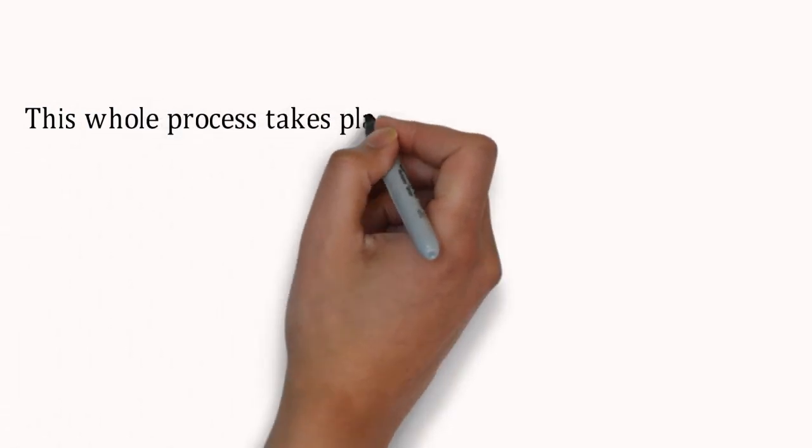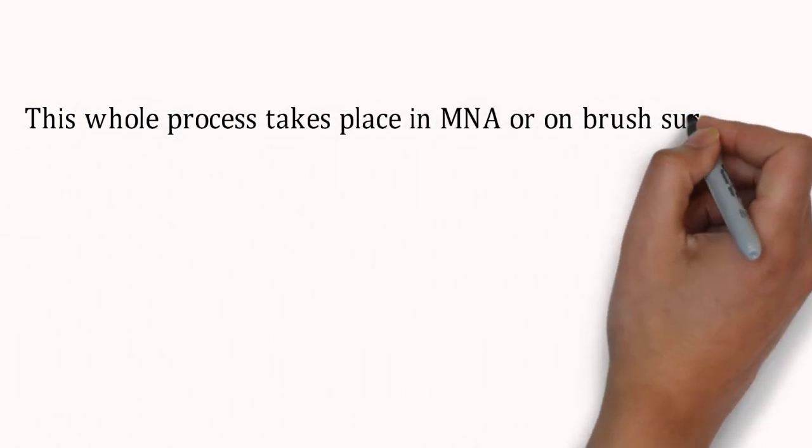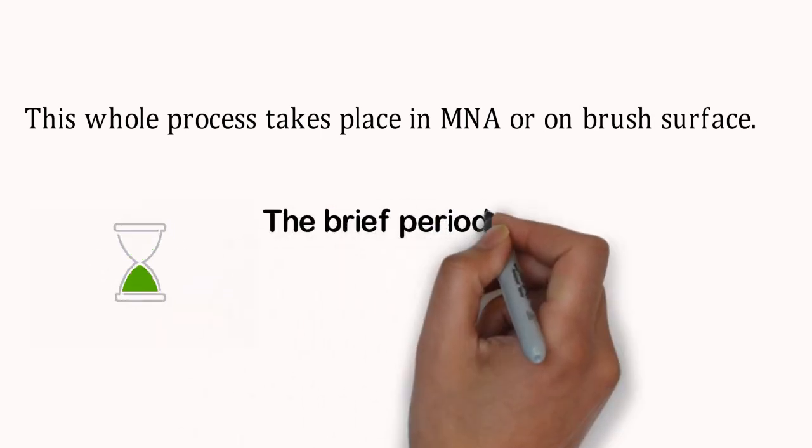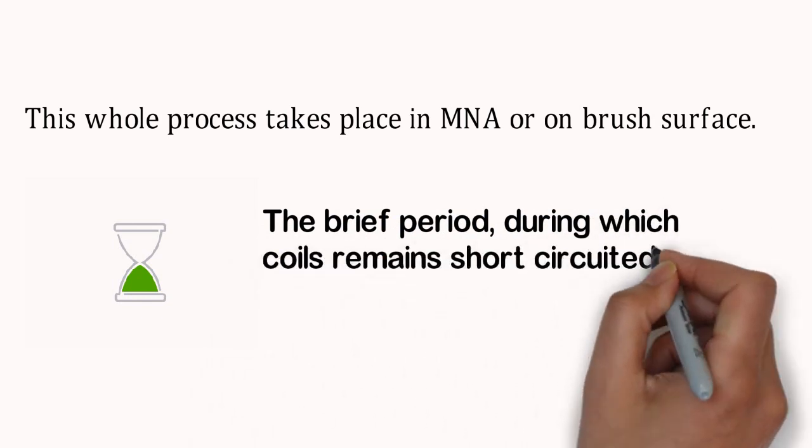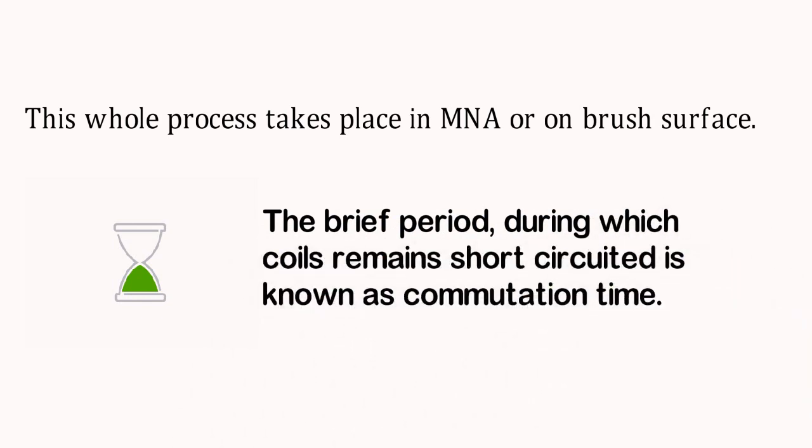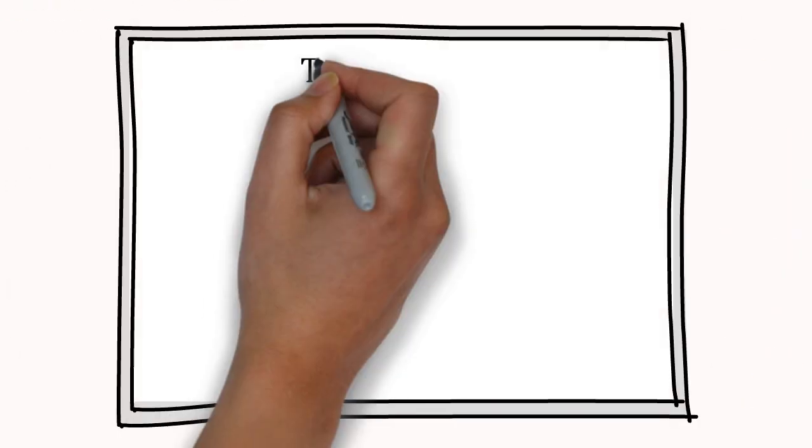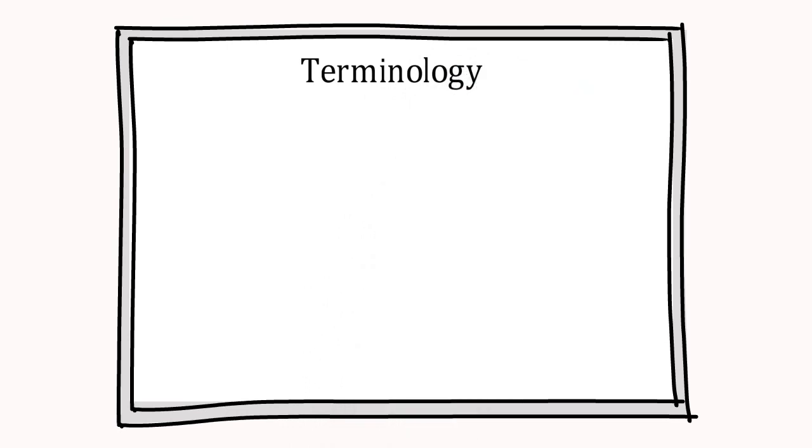This whole process takes place in MNA or on brush surface. This current reversal process takes fraction of time, which can be defined as commutation time. Before starting, let's understand basic terminology.